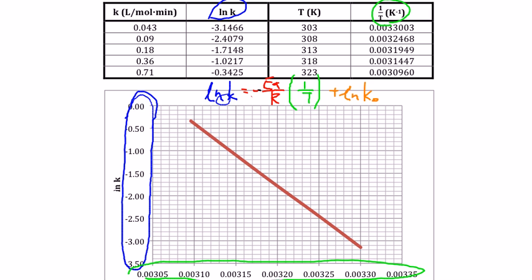So, we can find our activation energy, the red line, by getting the gradient of this line. And, the frequency factor ln K0 can be found by getting the subsequent Y-intercept when the X axis is equivalent to 0.